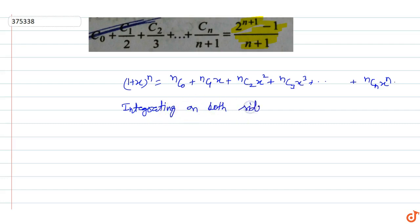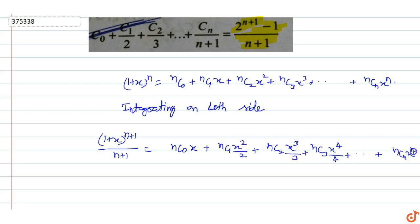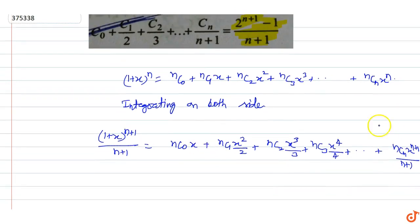After integrating both sides, the left side becomes (1 + x) raised to power n plus 1 upon n plus 1, and the right side becomes: nC₀ into x plus nC₁ into x squared by 2 plus nC₂ into x cubed by 3 plus nC₃ into x raised to power 4 upon 4, up to nCₙ into x raised to power n plus 1 upon n plus 1.